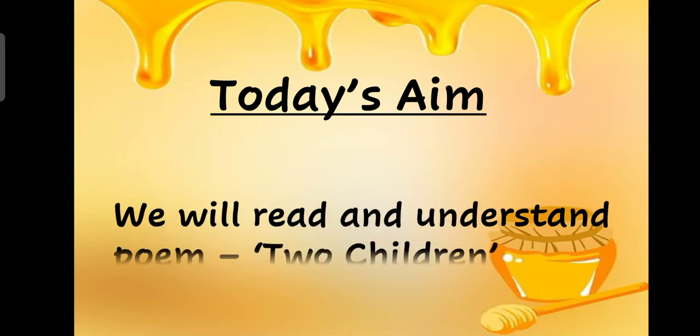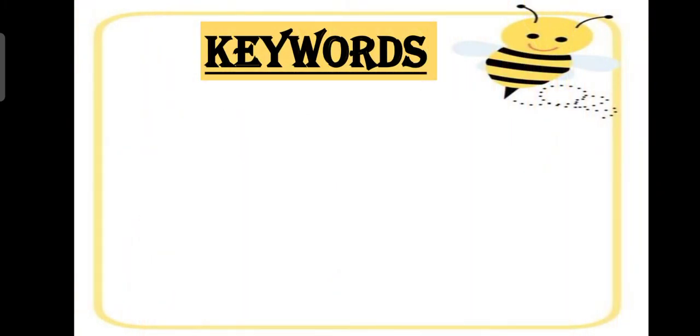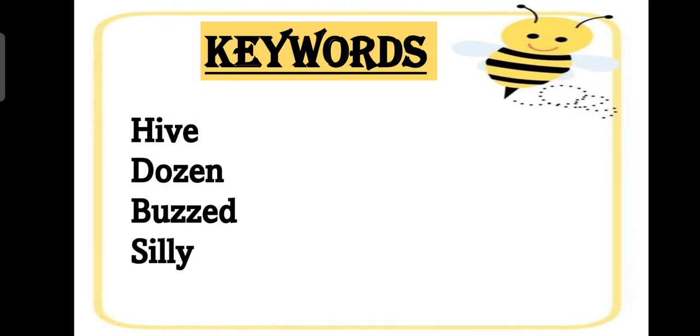Our today's aim is children we will read and understand poem two children. Students aaj hum hummari poem read karenge aur usko understand karenge. First we learn keywords of this poem that will help us to understand the poem easily. So the first keyword is hive.